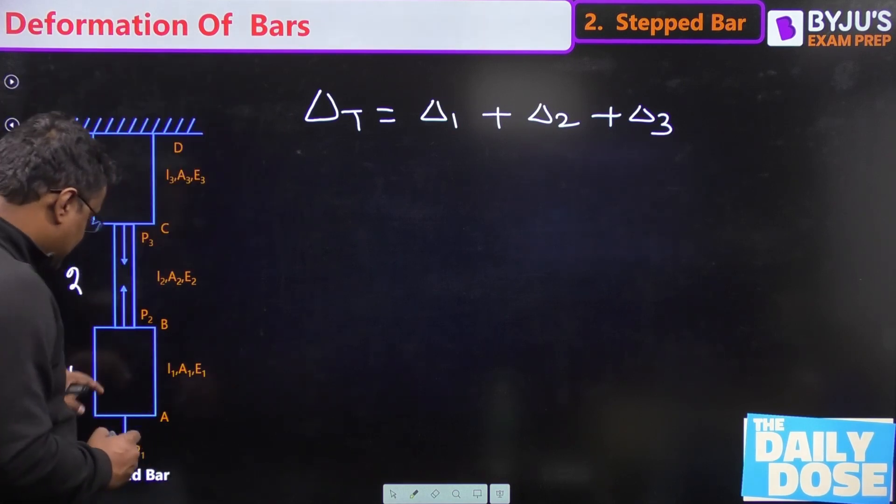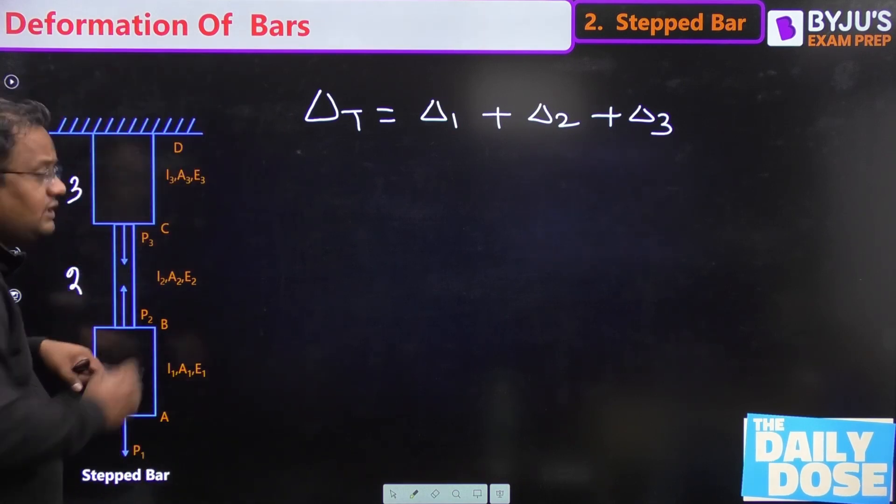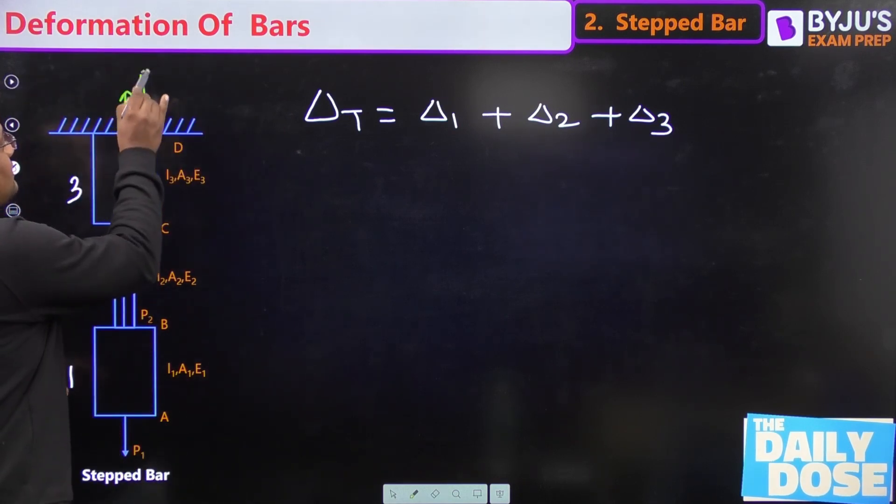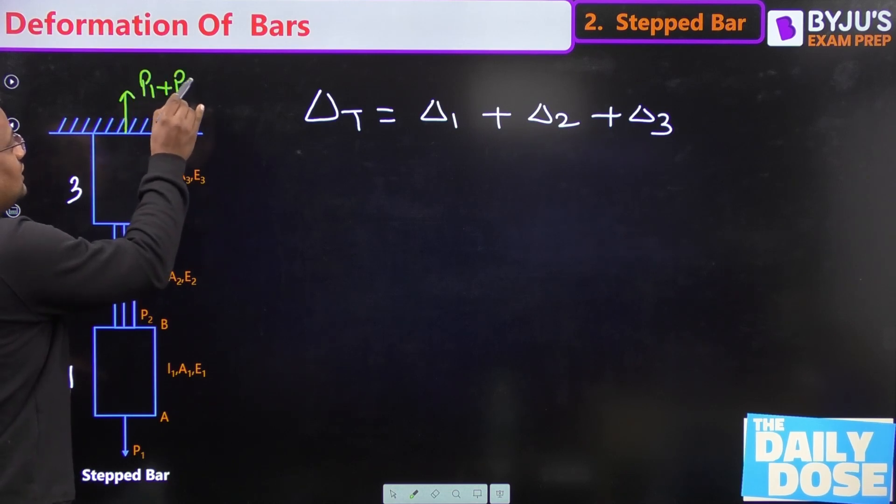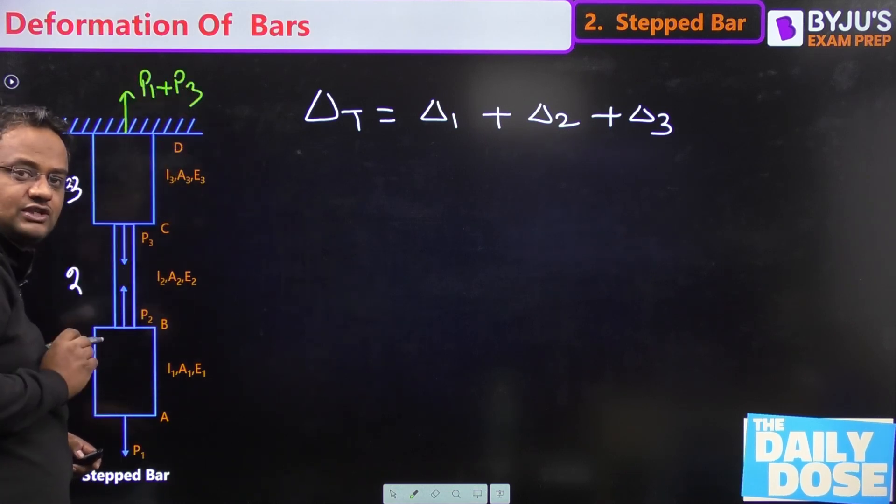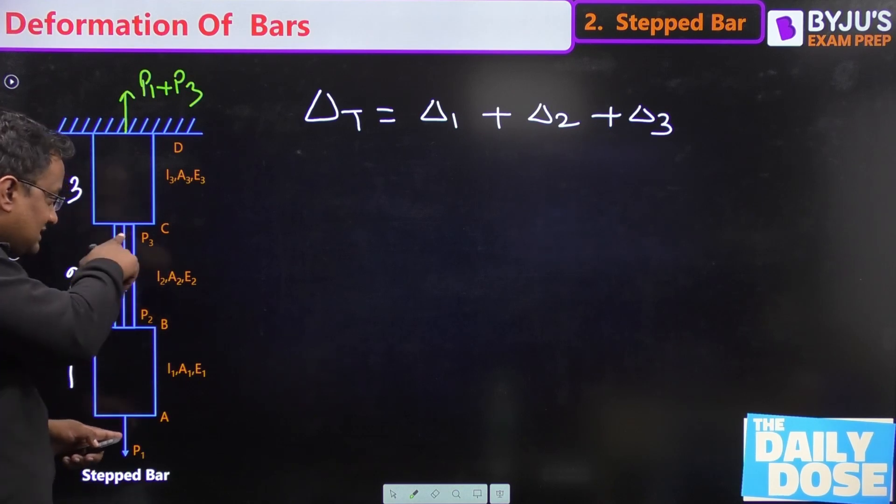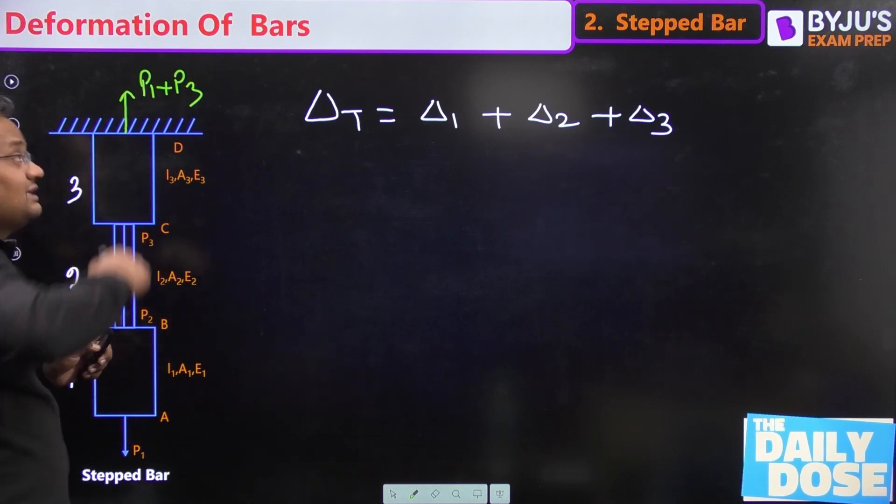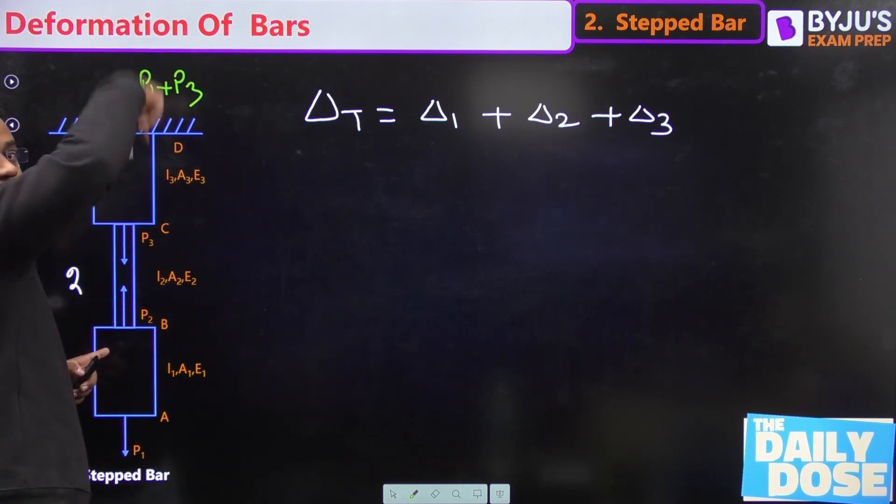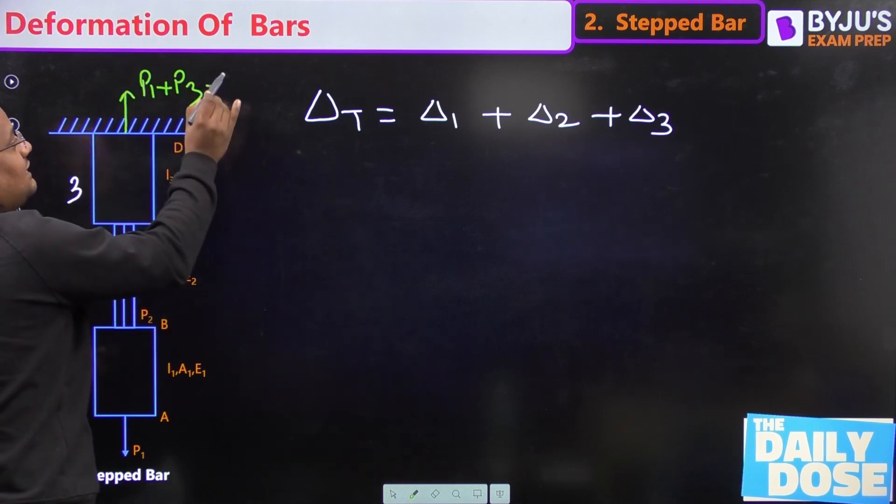Now first of all, reaction. See, P1 and P3 is going downward, so for balancing the upward reaction will be P1 plus P3. For P2 upward, the reaction should be P2 downward, which can be written as upward minus P2.